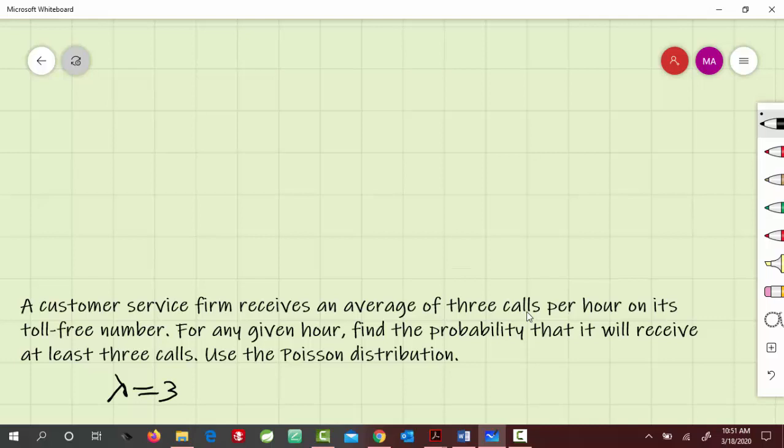For any given hour, we're talking about 1 hour, so T equals 1. We have to find the probability that it will receive at least 3 calls.